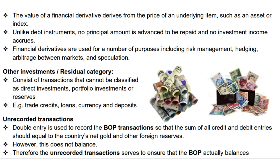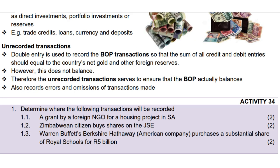Category 5: Unrecorded transactions. Here's the tricky part. When we record transactions in the balance of payments, BOP, which includes the financial account, everything should balance out. The total of all the credits, money coming in, should equal the total of all the debits, money going out. But sometimes it doesn't. That's where unrecorded transactions come in — they help make sure the BOP actually balances. It's like the missing puzzle piece that completes the picture. These unrecorded transactions can also account for errors and omissions in the records.